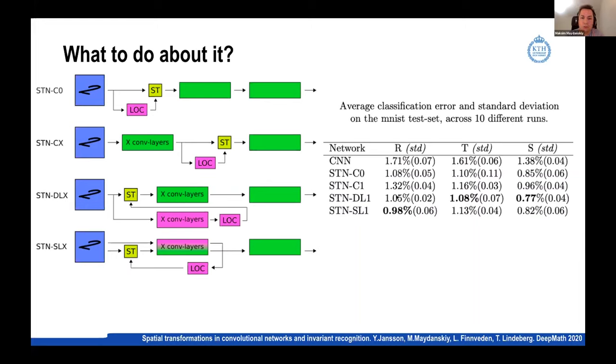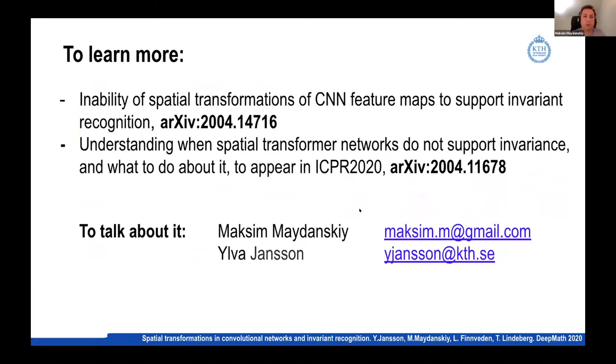So here you see some results on the MNIST test sets and you see that as predicted by the theory, for the translation there isn't really that much difference. But for the rotation and the scaling transformations, particularly the C1 architecture for rotation specifically gives a deterioration of performance while the shared parameters and this later alternative architectures improve the performance. They've also performed some further experiments on other datasets about which you can read in the papers here.